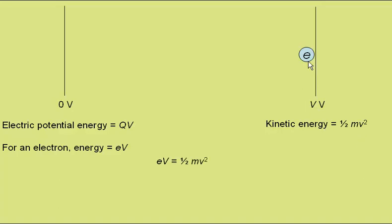At this point all its potential energy will have been converted into kinetic energy so we can say that its potential energy, eV, at this point will be equal to its kinetic energy, half mv squared, at this point.